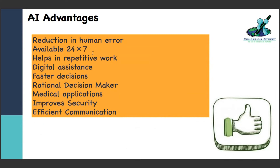Now coming to the advantages of AI. Reduction in human error - there are a lot of algorithms fed into AI machines and AI utilizes real-time examples, and hence it reduces human error. Available 24/7 - humans work eight to nine hours and can only give their best for that much time, but if there's some system which needs attention around the clock we can have AI placed there.